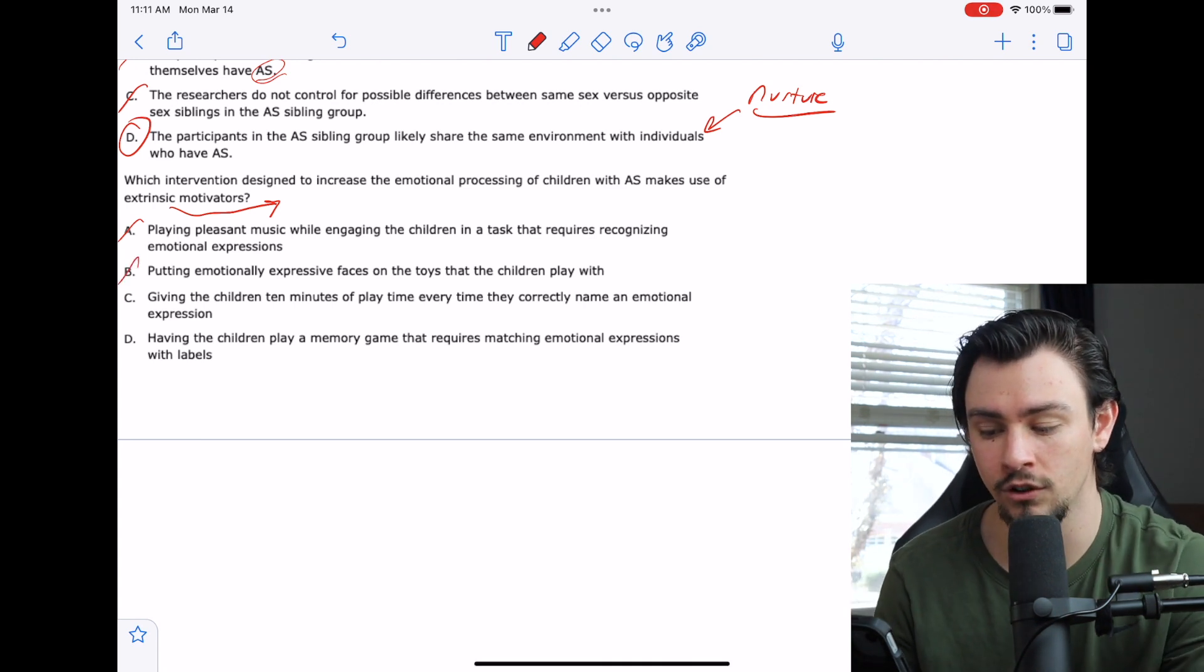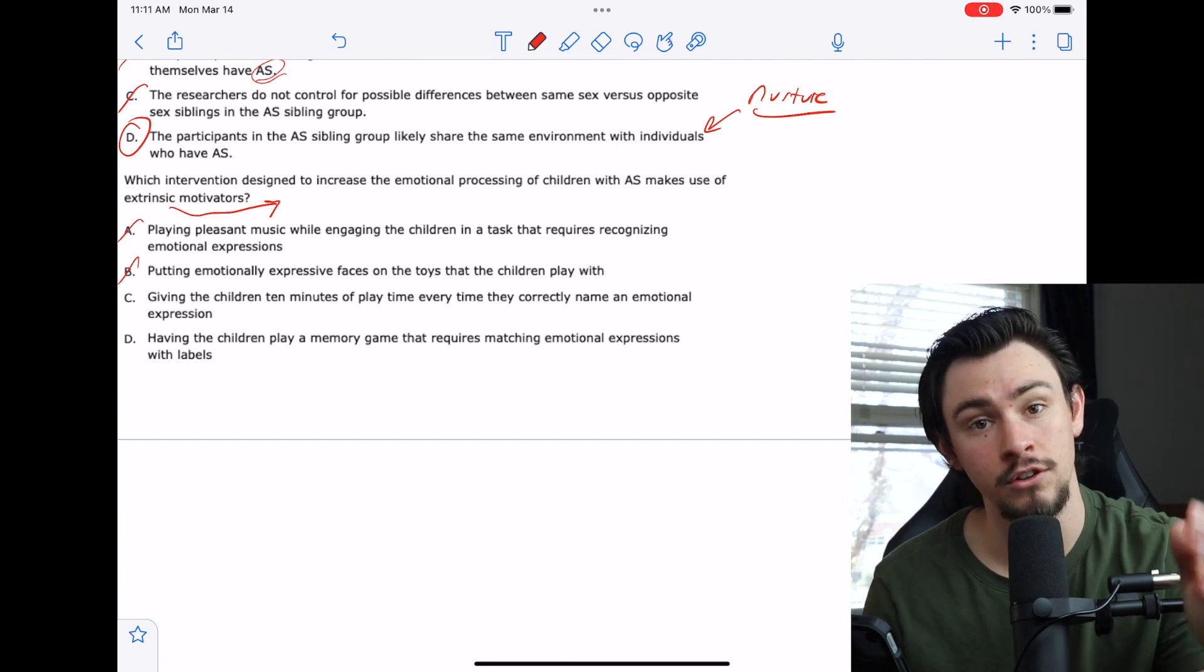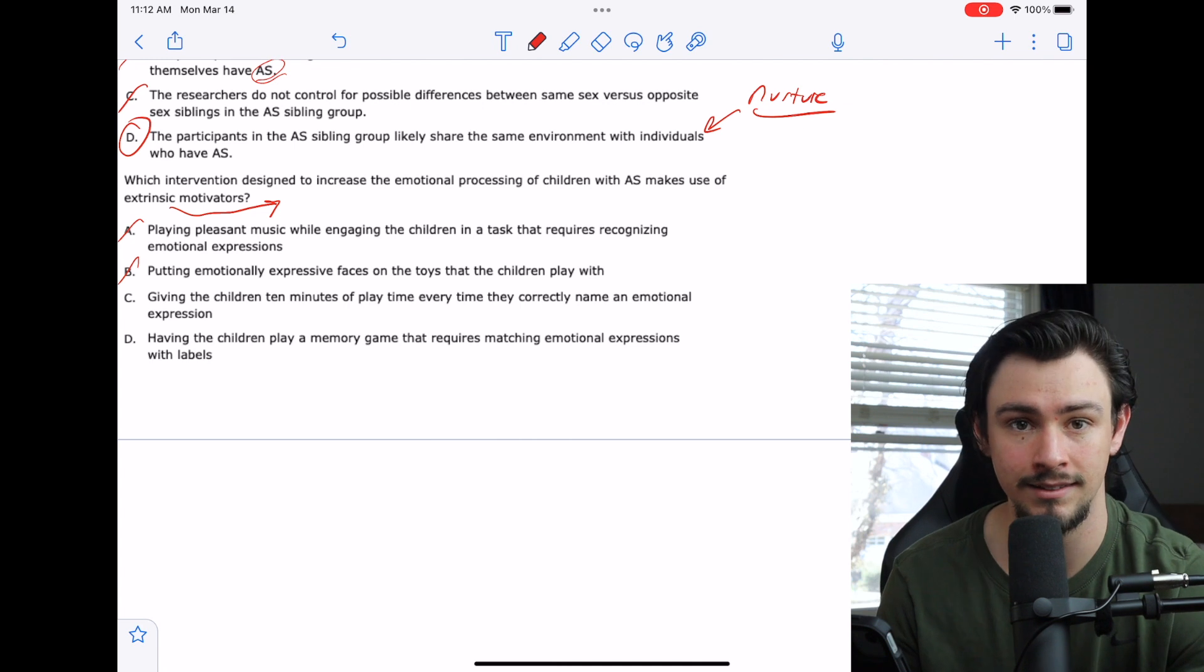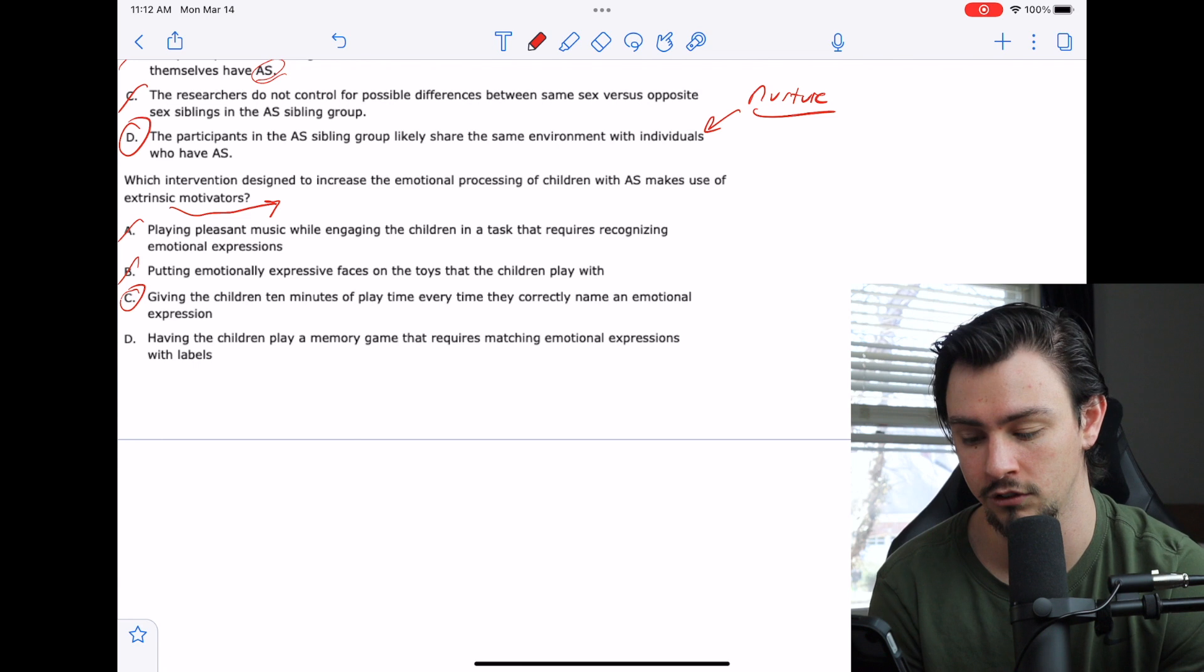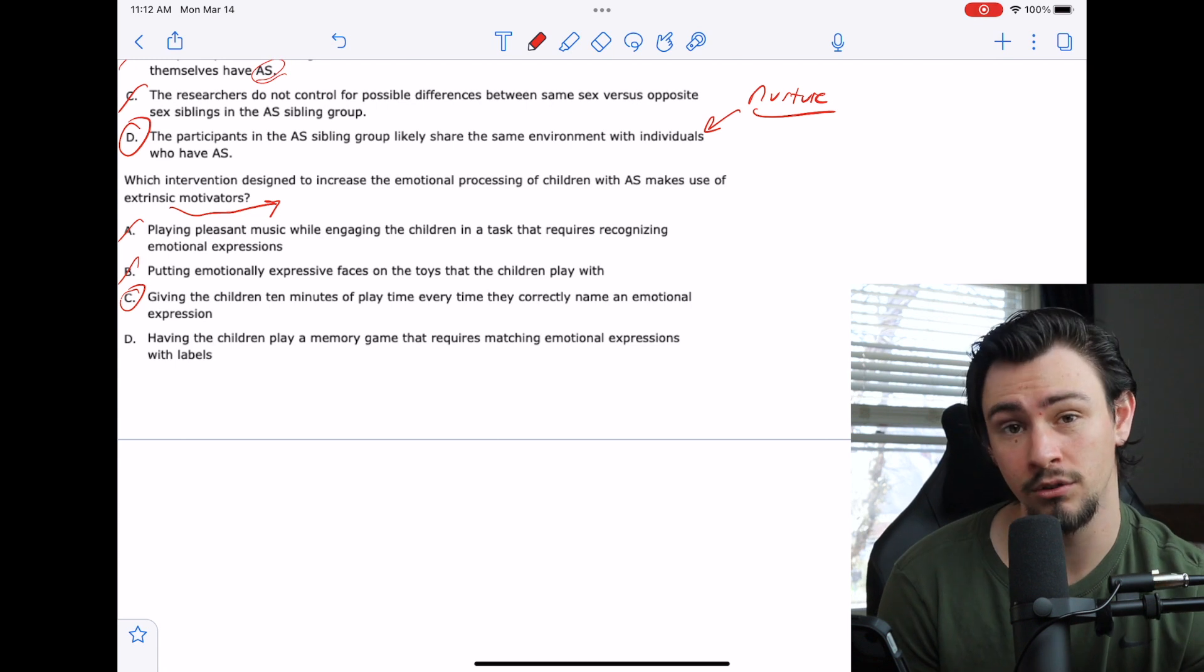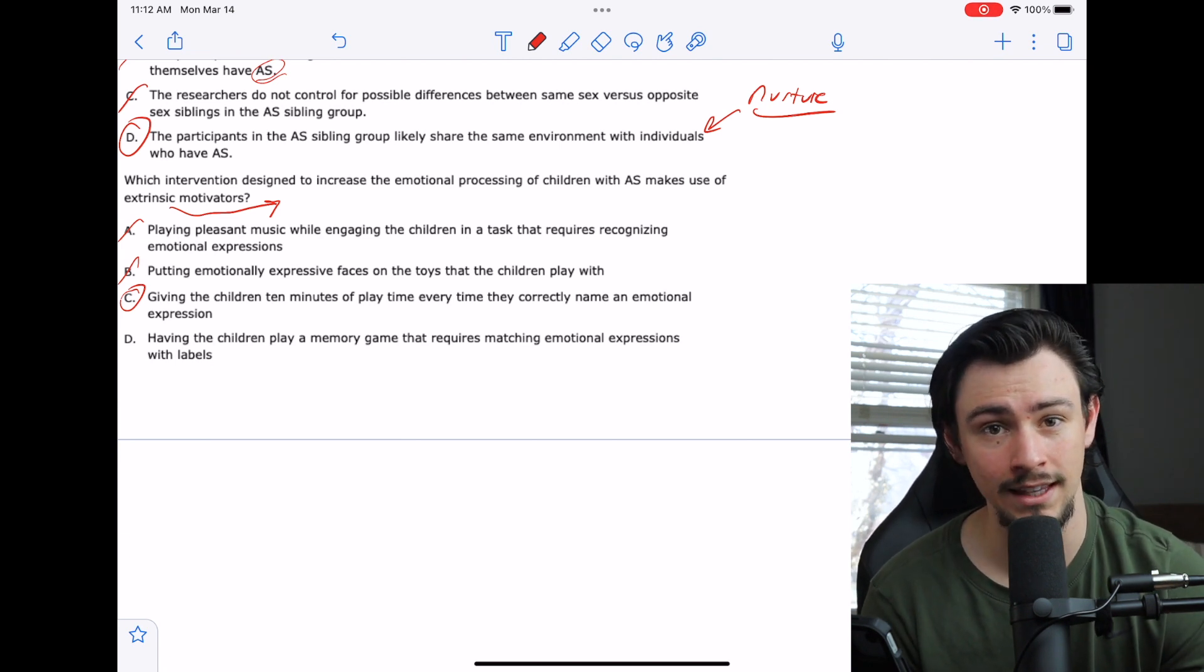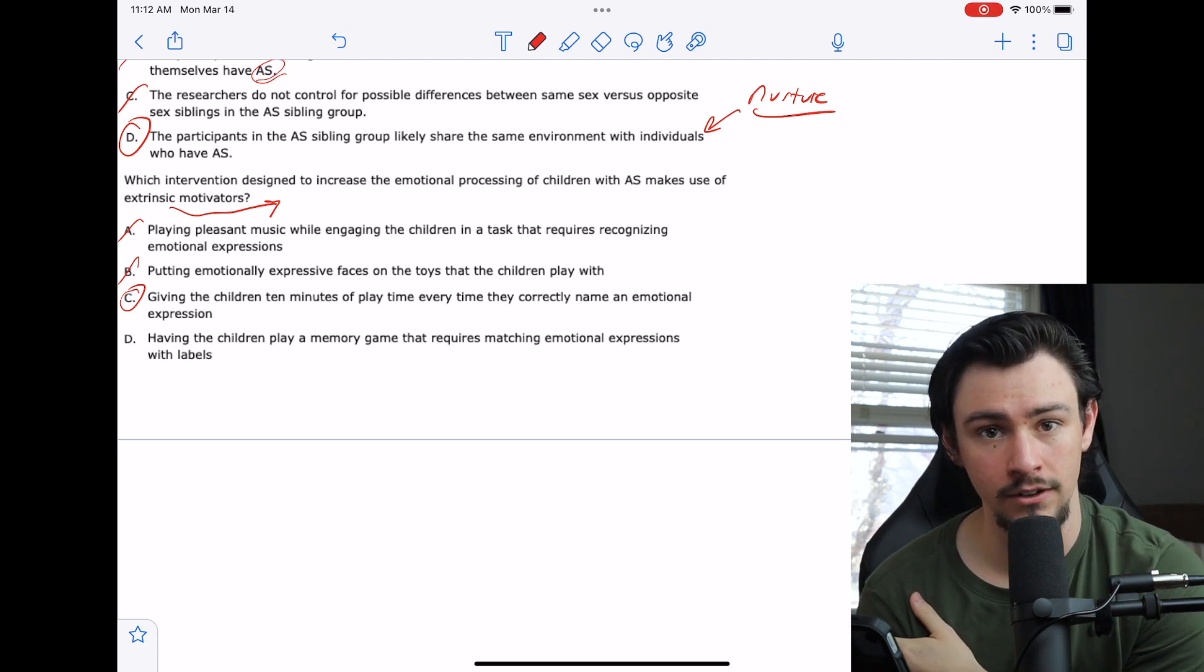C says we'll give the children 10 minutes of playtime every time they correctly name an emotional expression. If you perform correctly, then we'll give you a reward and that reward will be extrinsic. Like you can go outside and play. So I like C. D says having the children play a memory game that requires matching emotional expressions with labels. There really doesn't seem to be much of a reward. The only possible reward here would be that if the children win the game, they might feel better inside, and that would be an intrinsic motivator.